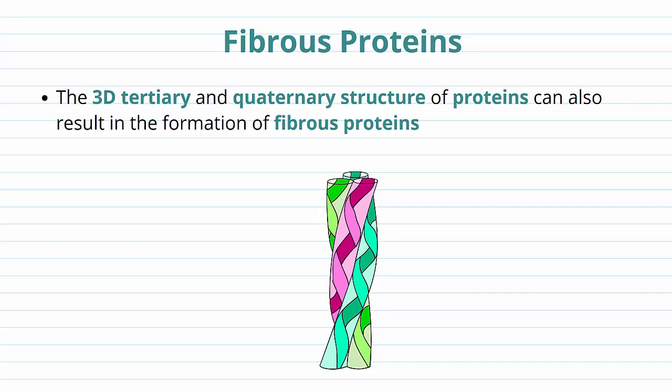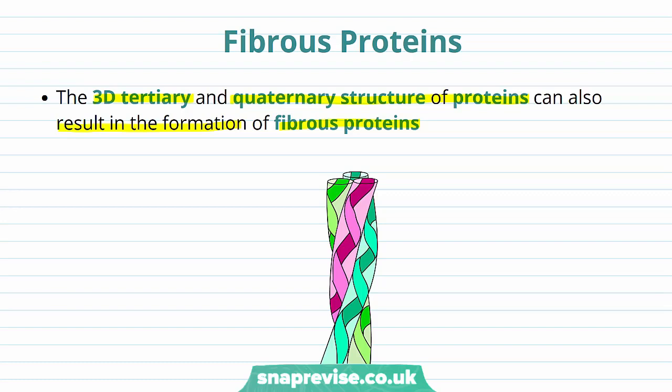Fibrous proteins are another category of proteins alongside globular proteins and they have particular features in common. It's the 3D tertiary structure and the quaternary structure of a protein which results in the formation of a fibrous protein, in the same way as a globular protein. Fibrous proteins tend to have very similar features, all designed based on their primary sequence and tertiary structure of amino acids.